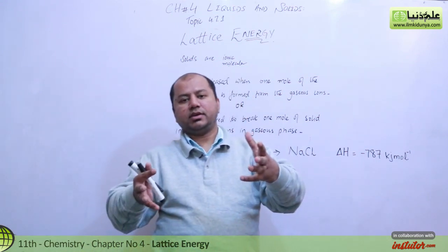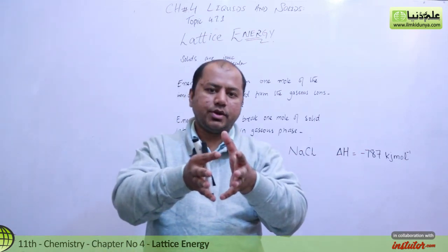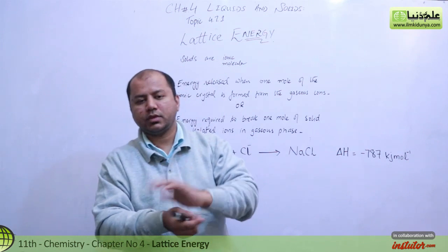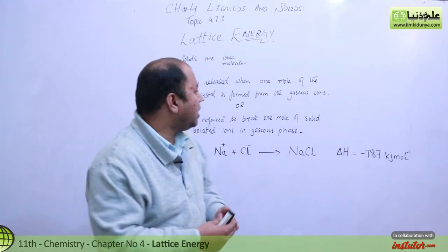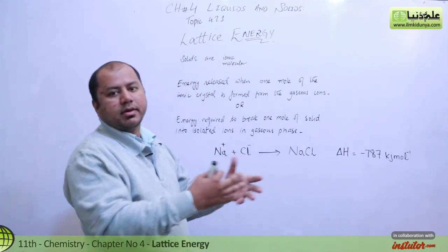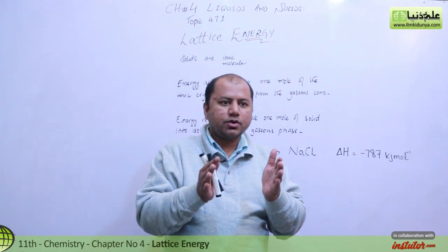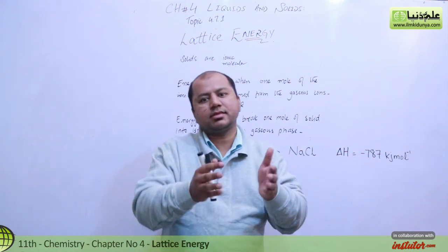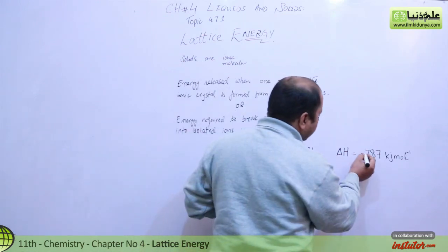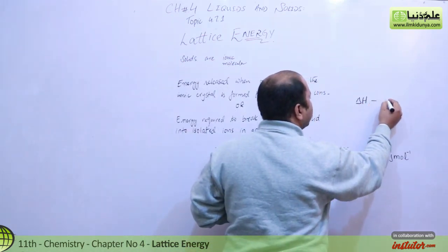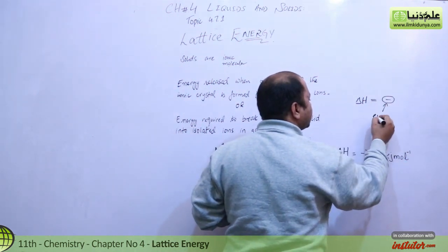When ions come together, they make a formula unit — as I discussed in my previous lecture — sometimes they make a molecule, and they release some energy. When atoms come close, they release energy, and this is shown by a negative enthalpy. The negative sign indicates that energy is released.